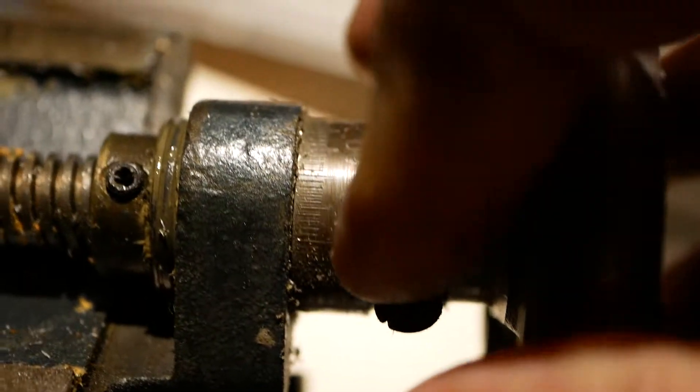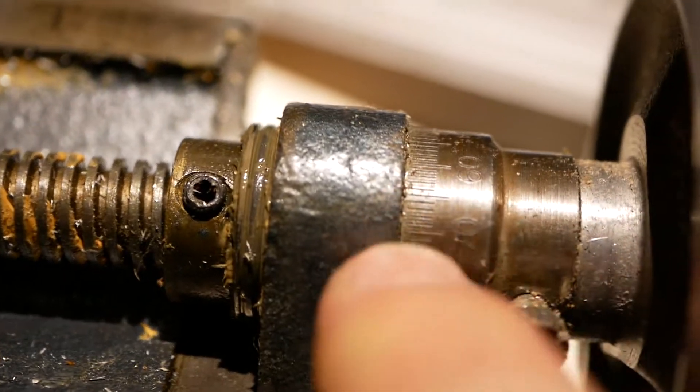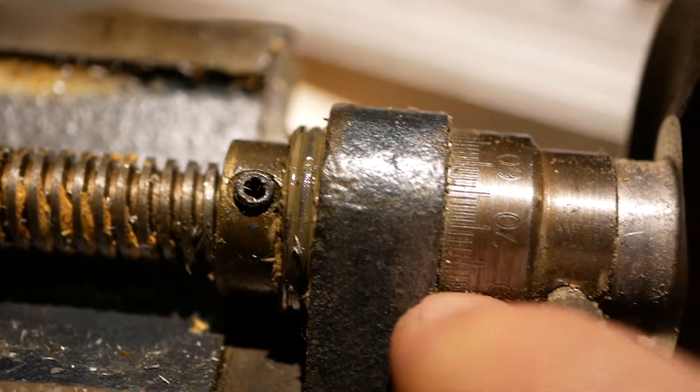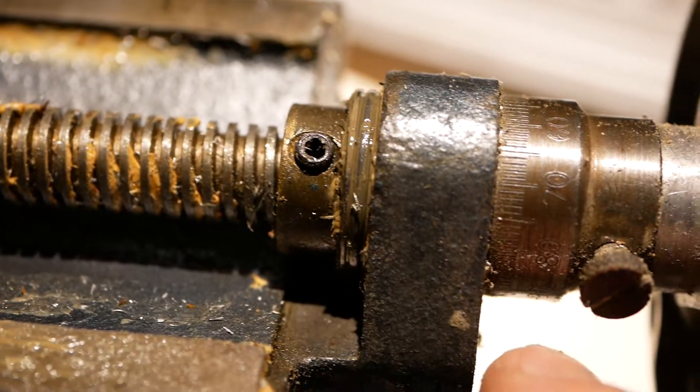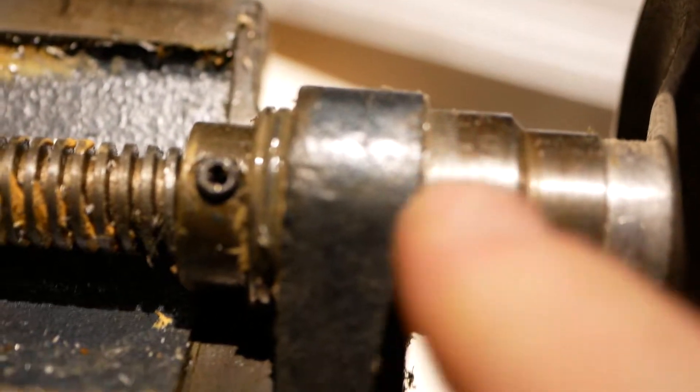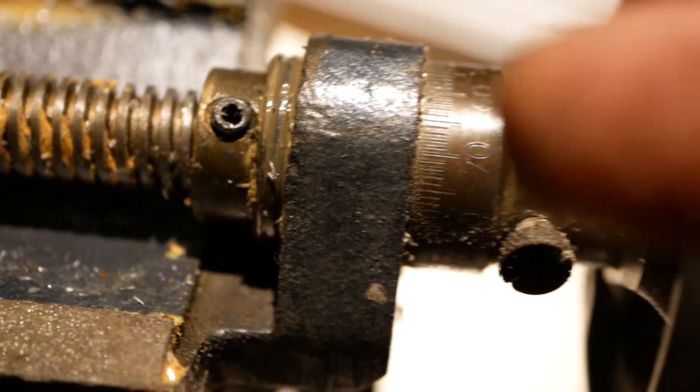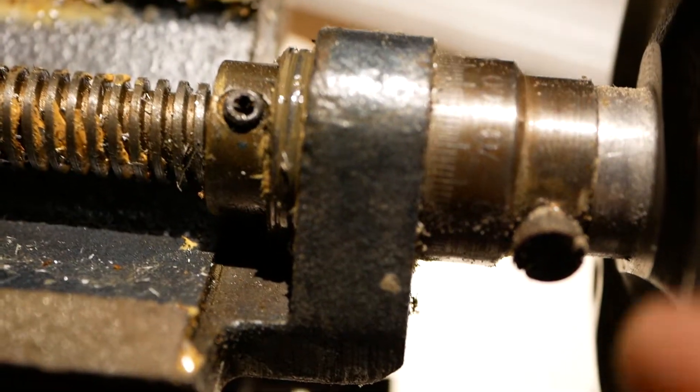But on the chinesium ones, that's not the case. And this is actually two pieces. So you have a steel piece right here that bolts into the casting. So this side of the casting might be machined. That ring is flat-ish and it's got two screws going into the casting.